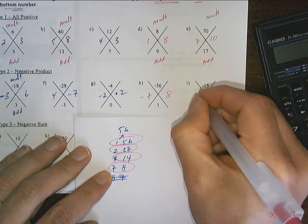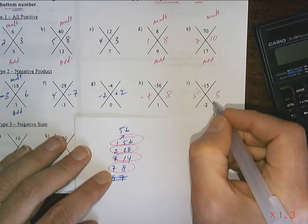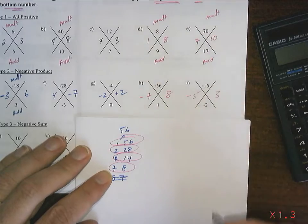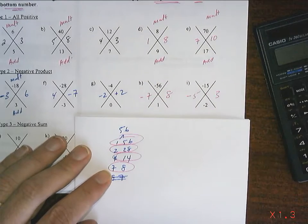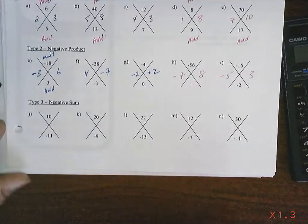15 will be 5 and 3. I just now have to figure out where the negative goes. Negative 5. Because it's a negative 2.